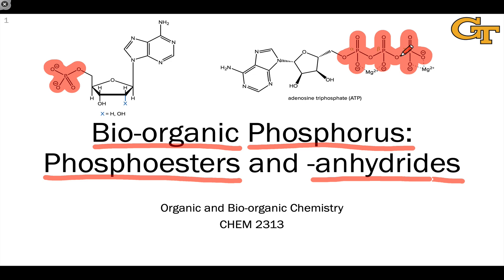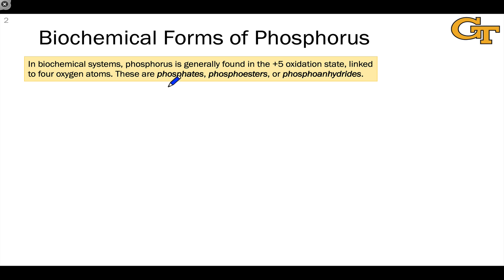Phosphoanhydrides are a key energy source in living systems. The energy is found in these relatively weak phosphorus-oxygen bonds, which are susceptible to hydrolysis reactions that tend to be exothermic, energy-releasing, and a source of chemical energy for further transformations inside a cell. The states of phosphorus found in biochemical systems include phosphates or phosphoric acid, phosphoesters with at least one organic group, and phosphoanhydrides, which typically include an organic group linked to two or more linearly linked phosphates.